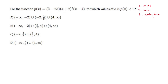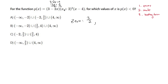Our zeros exist whenever each factor is equal to zero. For the first factor, 3 minus 2x equals zero: subtract 3 from both sides, divide by negative 2, and the zero is positive 3 over 2. The other zeros are really nice — negative 2 makes that factor zero, and positive 4 makes that factor zero. We found our zeros.